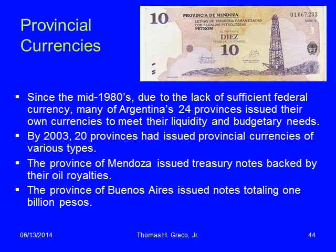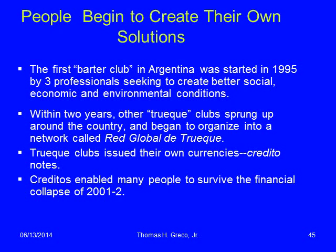Here's one of the provincial currencies from the province of Mendoza — an oil-rich province that gets royalties on petroleum extraction. They issued provincial bonds on the basis of anticipated petroleum royalties. The first barter club in Argentina started in 1995 and expanded quickly. When the financial collapse hit in 2001, there was a huge upsurge of participation in these Trueque clubs, but there wasn't time to orient them all properly — like people jumping aboard lifeboats and swamping them, causing them to sink.